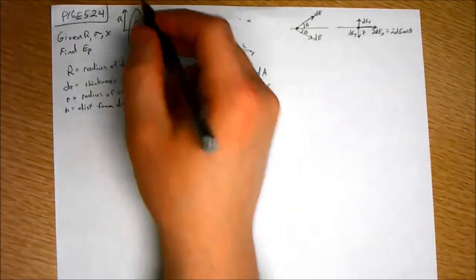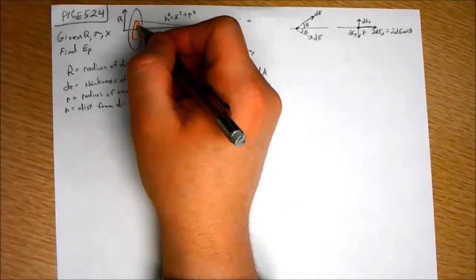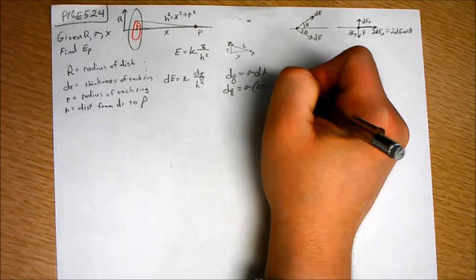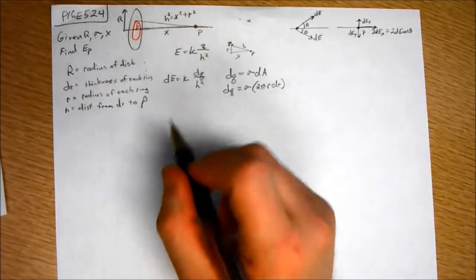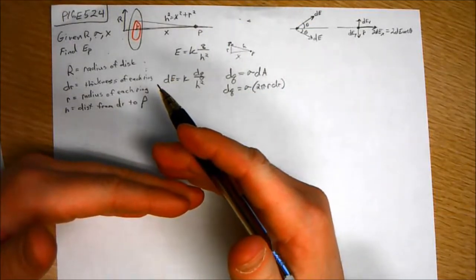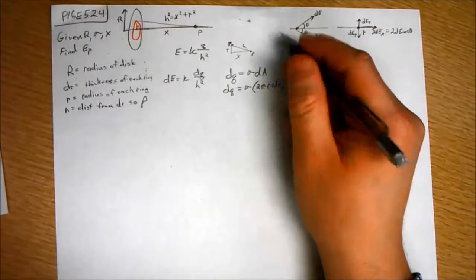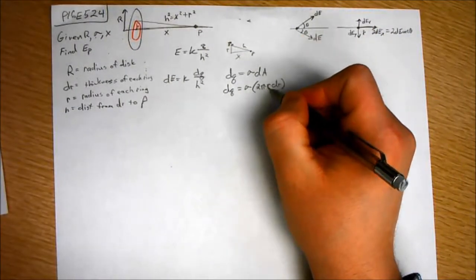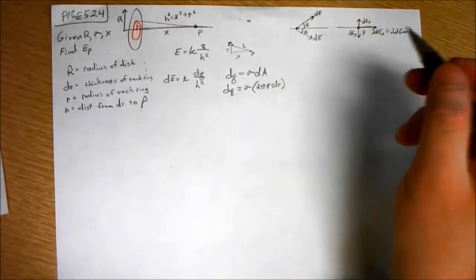So, DQ equals surface charge density sigma times 2 pi R, which is the circumference of one of these circles, times DR, which is the thickness of the ring. The circumference is going to have some span, but since we're talking about infinitesimally thin rings, we don't have to worry about that spread of R. So, it's just 2 pi R, the circumference, times the thickness of the ring.